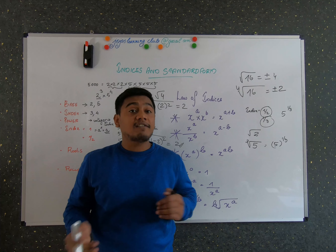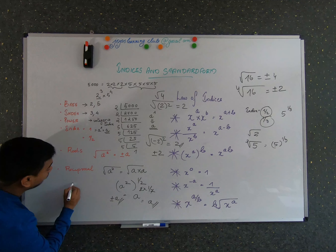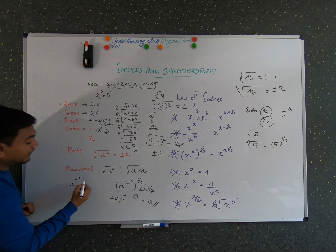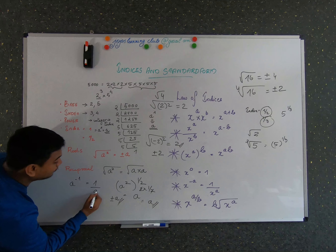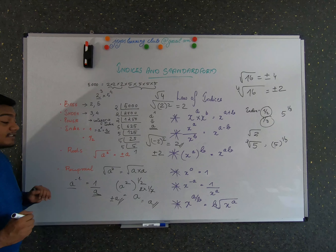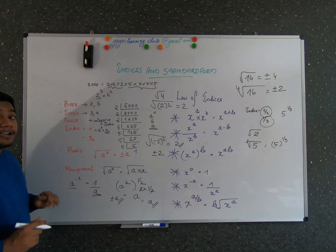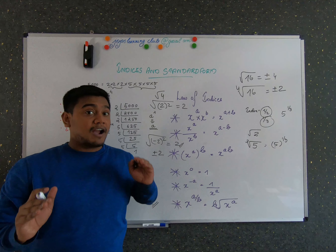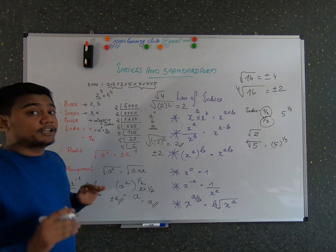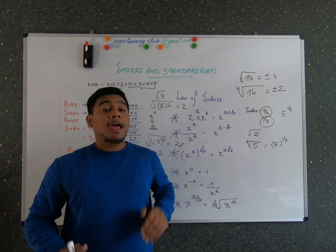Now, what is a reciprocal? A reciprocal is the number 1 divided by the base number. The formula is: any number 'a' raised to minus 1 equals 1 divided by a. Here 'a' is the base and minus 1 is the index. So any number raised to minus 1 is simply 1 divided by that base number.